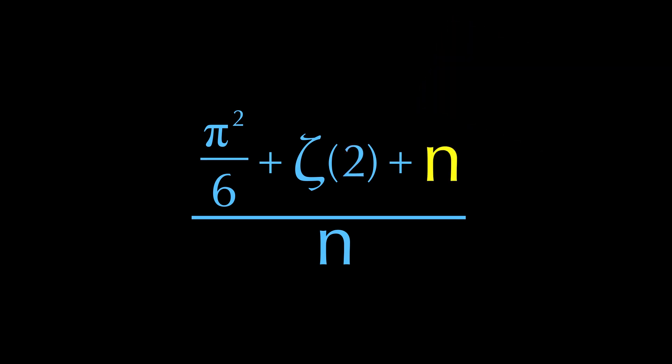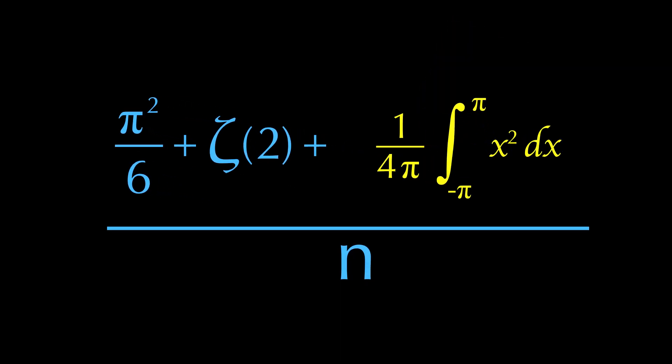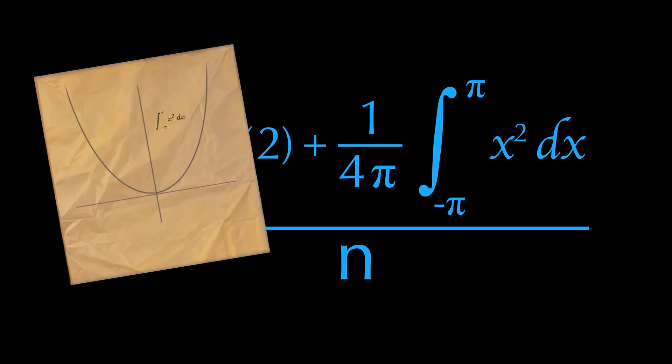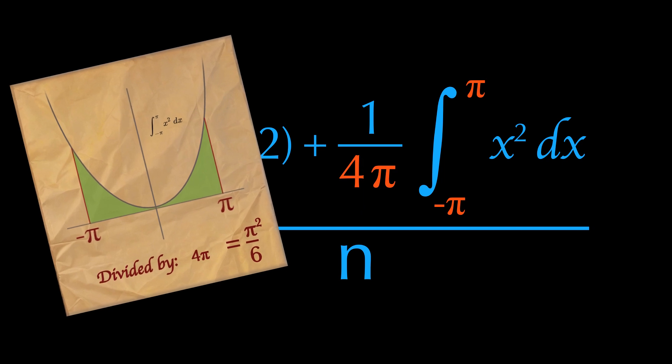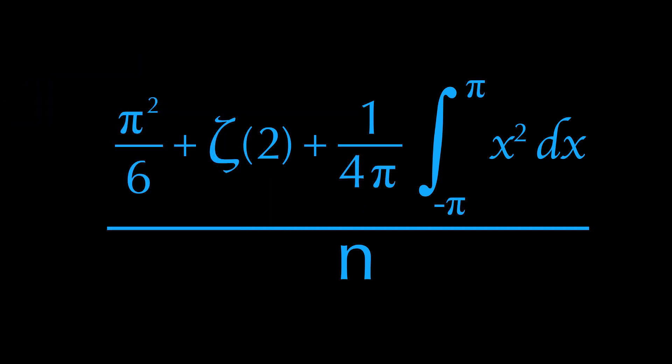Now for the third one, I did find this slightly more intimidating looking integral while looking up the problem. But to be honest, it is not that much impressive if you really think about it. It is just a typical parabola from negative pi to positive pi divided by 4 pi. I found it on Wikipedia, and it fits, so let's use it.